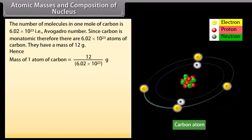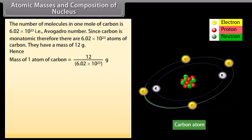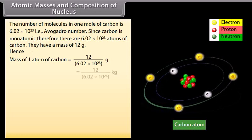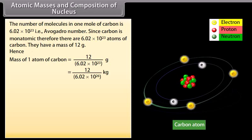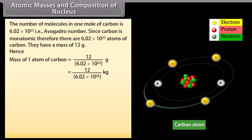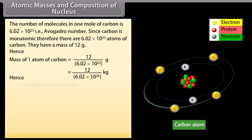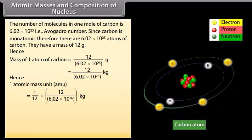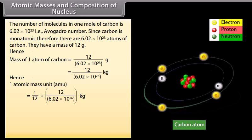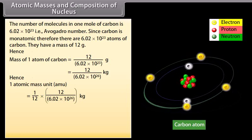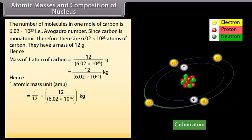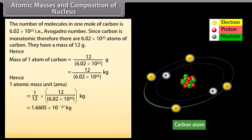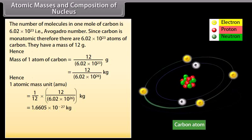Hence, mass of 1 atom of carbon is equal to 12 by 6.02 × 10²³ gram, which is equal to 12 by 6.02 × 10²⁶ kilogram. Hence, 1 atomic mass unit is equal to 1 by 12 into 12 by 6.02 × 10²⁶ kilogram, which is equal to 1.6605 × 10⁻²⁷ kilogram.